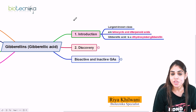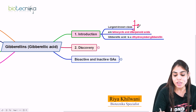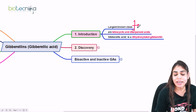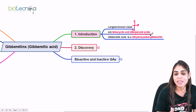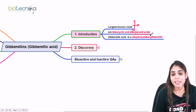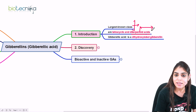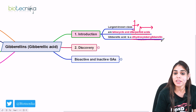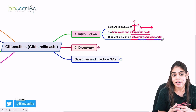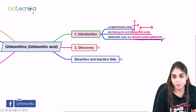Gibberellic acids are known as the largest class of phytohormones. They are tetracyclic in structure, meaning they contain four cyclic rings. They are diterpenoid acids, which are acidic compounds containing 20 carbons in their structure and belong to the class of terpenes — a secondary metabolite — hence they are called diterpenoid acids. Gibberellic acid is a dihydroxylated gibberellin, meaning when all four rings are arranged, two hydroxyl groups are added to the structure.